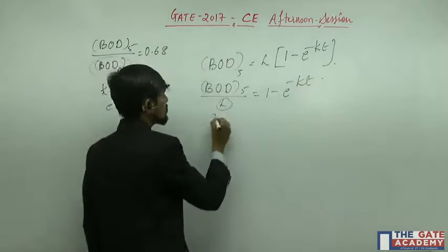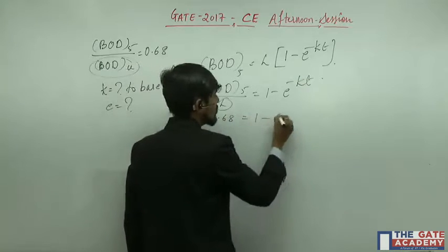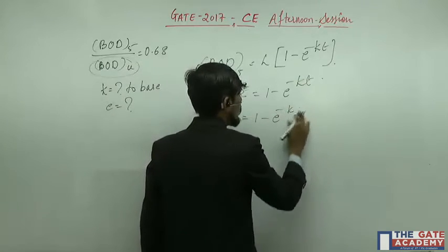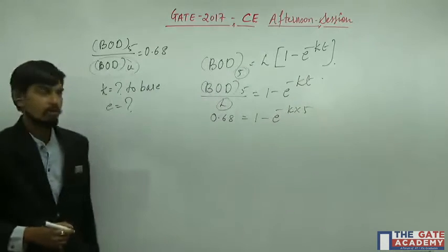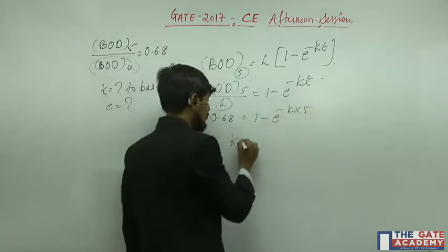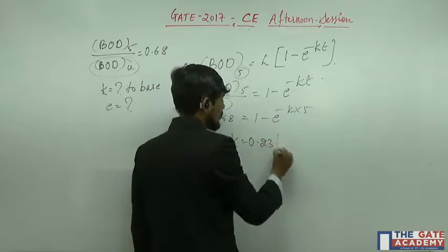Hence this value is 0.68, that is equal to 1 minus e raised to minus kt. So t is here 5, this is that value of t. If you solve this, you will get k value equal to 0.23 per day, standard value.